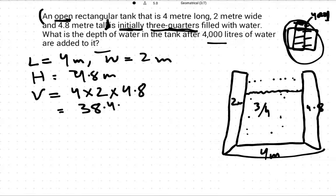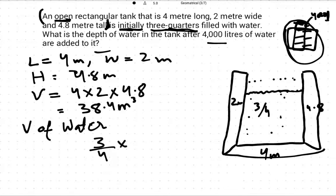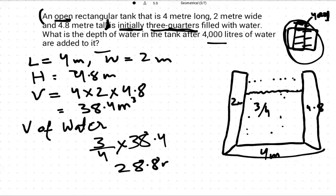This is the whole tank volume. The volume of water is three-quarters of the tank volume. So volume of water equals (3/4) × 38.4 = 28.8 meter cube. This is the volume of water initially in the tank.